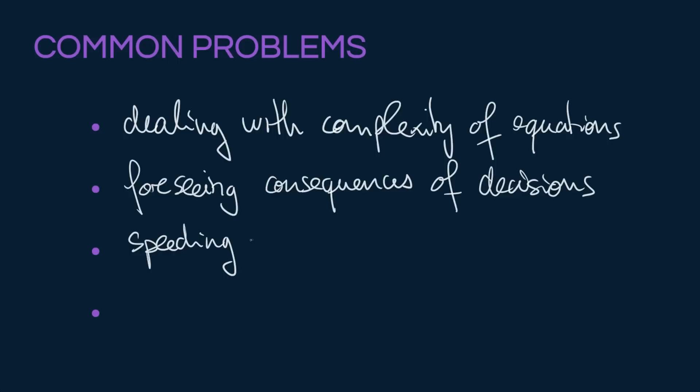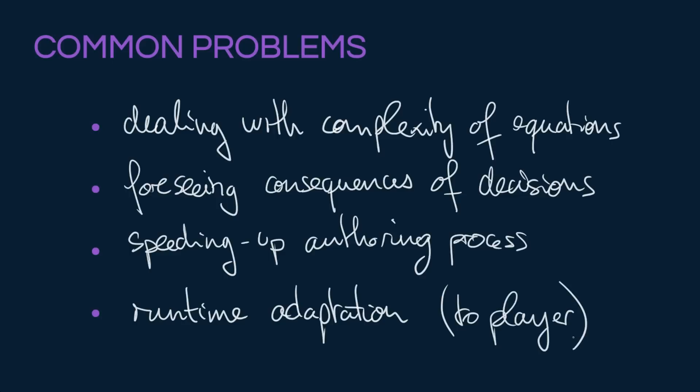Another thing that's very useful is to speed up the process with which these equations can be written, and how these decision processes are actually authored. It can take a long time to build and to test and to tune these things. So any speed improvement helps a lot. And finally, having some kind of runtime adaptation is also very useful. You can predict beforehand a lot of things about how the player is going to behave, but there are certain things that you have to wait until the actual runtime to be able to know exactly what the player is going to do, and then make some tweaks and changes dynamically as the game is running. And it's probably the hardest one.